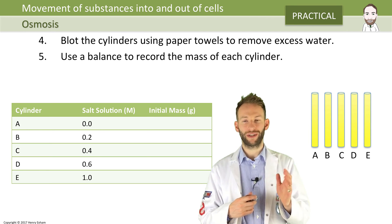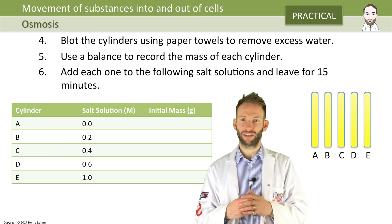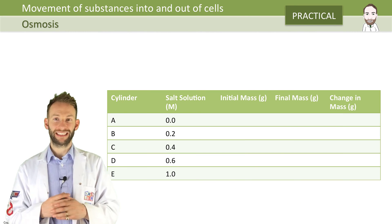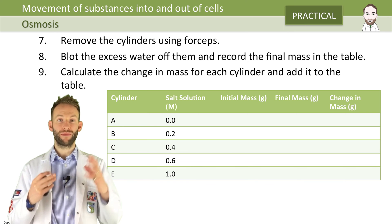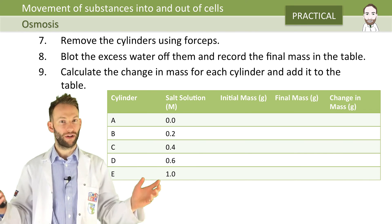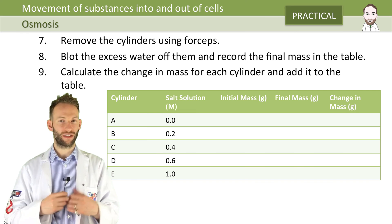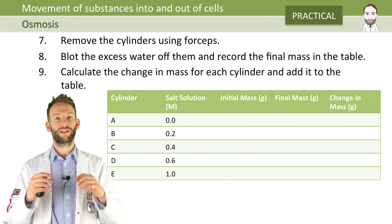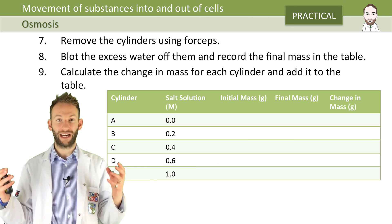We're going to add them to a range of salt solutions, from 0.0 moles up to one molar solution — five different salt solutions. After 15 minutes, you remove the cylinders, blot them again to get the excess water off the outside, and record their final mass. What you'd expect to find is that the ones in pure water — zero moles salt solution — are going to gain mass. Water will move in by osmosis from high water potential to low water potential inside the potato cells. The opposite extreme — cylinder E in a very, very concentrated solution — we expect those cells to lose water and therefore lose mass.